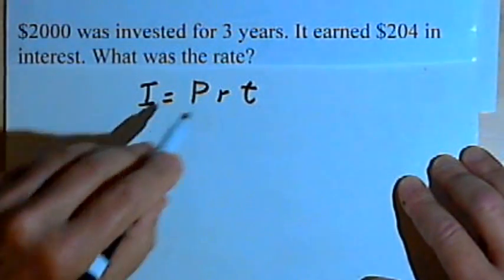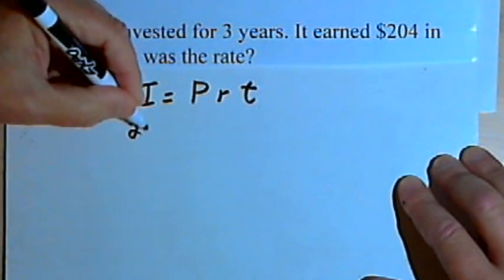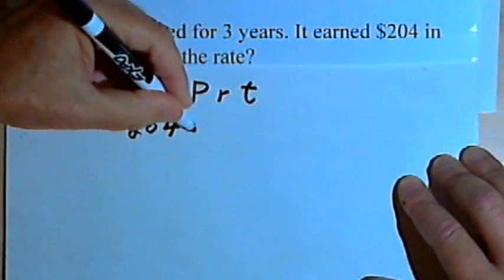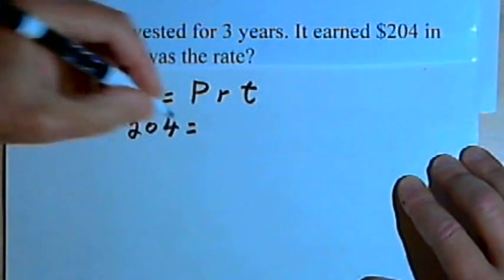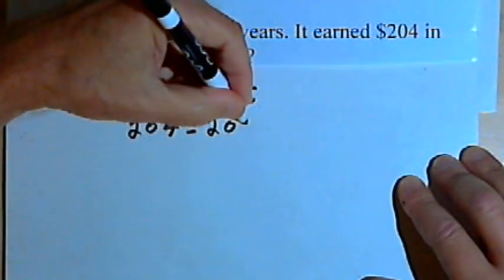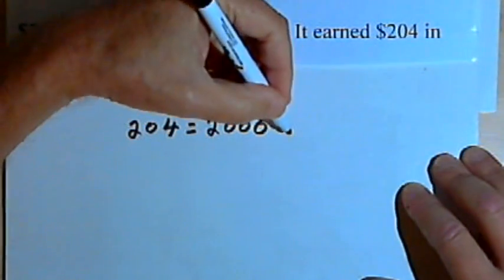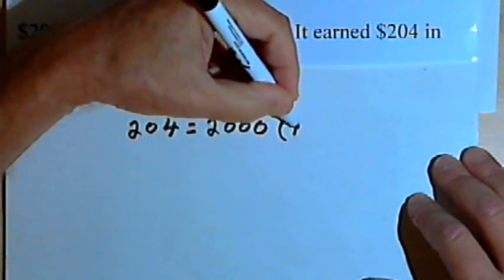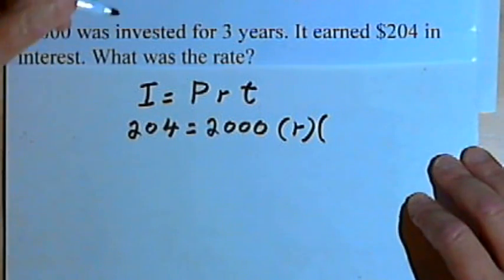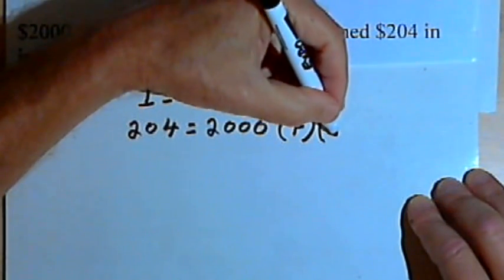We know the interest, that was $204. We know the principal this time, that's the $2,000 that was invested. We're looking for the rate, so we'll just leave that as R. And we know the time. The time is three years.